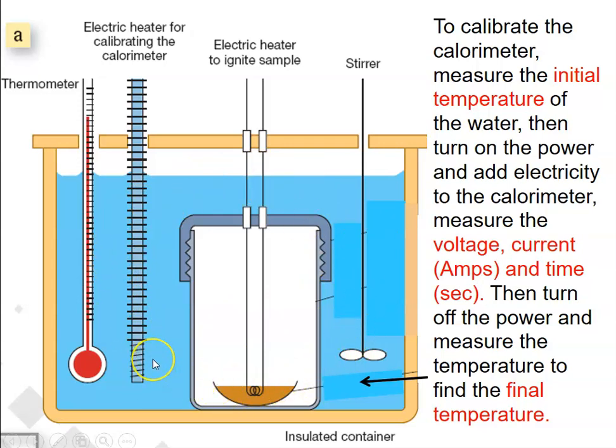So what you would do if you're trying to calibrate it: you'd measure the initial temperature, then you turn your power on. This is basically like a giant kettle—you're adding electricity into here which is heating the water. You're going to be measuring the voltage of the electricity, the current, and the time that you leave it on for.